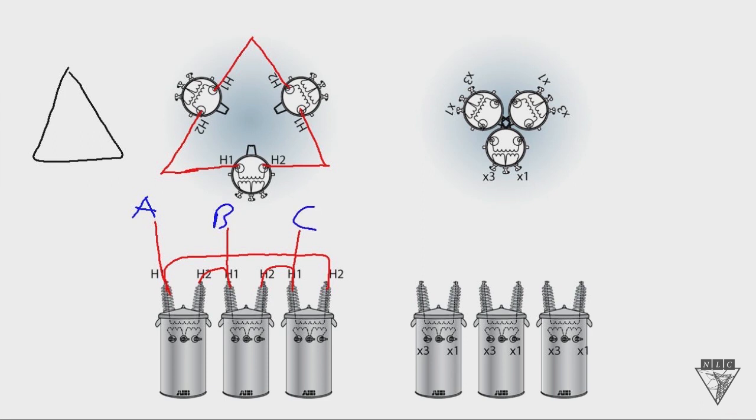That would be the same as if we put them up here: A phase, B phase, and C phase. Imagine these are your connection points and then it comes out and goes up to the phases. So that's the primary side for a delta connection.